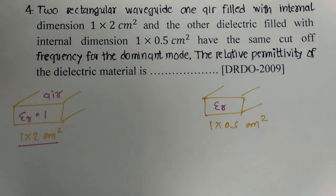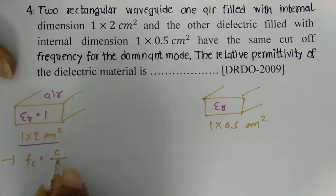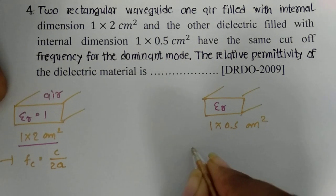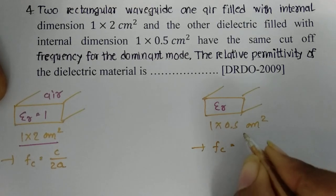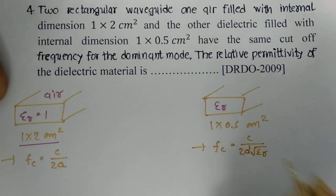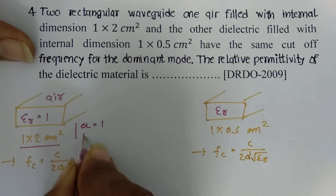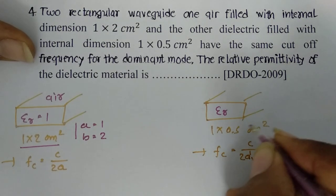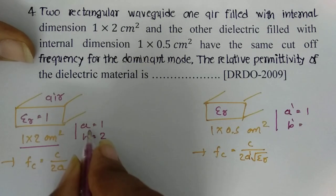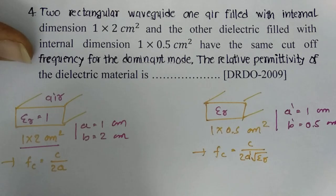For the air-filled waveguide, the cutoff frequency for the dominant mode is Fc = C/(2a). For the dielectric-filled waveguide, the cutoff frequency is Fc = C/(2a'√εr). Here a' and b' are the dimensions of the dielectric waveguide, with b' = 0.5 cm. Since both have the same cutoff frequency, we compare the two equations.